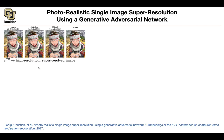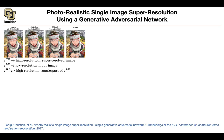So what is the math behind this? You're going to have a high resolution super resolved image coming out of your neural network. ISR is the output of your neural network — it's the output of your generator. ILR is the low resolution input image. And IHR is the ground truth, so you have a high resolution counterpart of ILR. These are your data, and ISR is the output of your network.